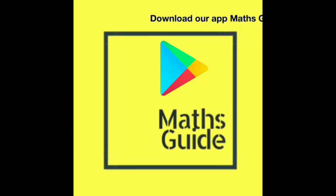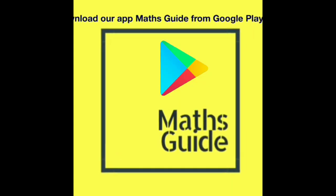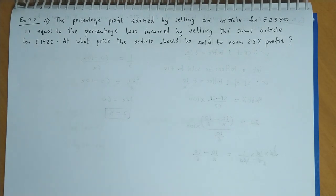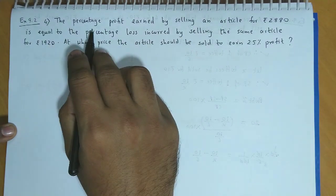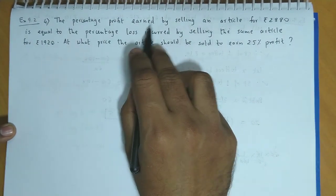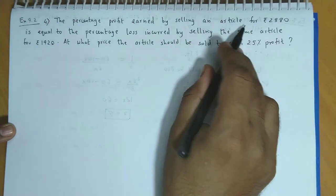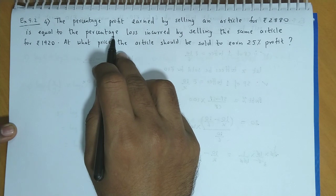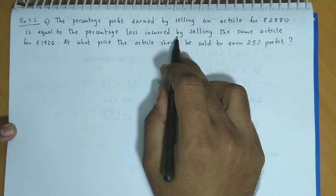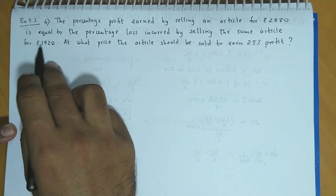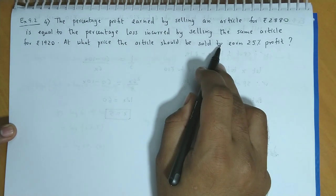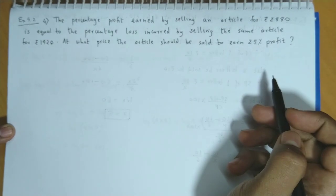Download the App Maths Guide from Google Play today. Exercise 9.2, Question number 4: The percentage profit earned by selling an article for Rs. 2880 is equal to the percentage loss incurred by selling the same article for Rs. 1920. At what price should the article be sold to earn 25% profit?